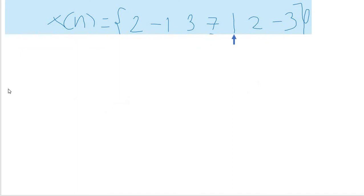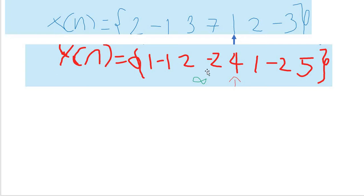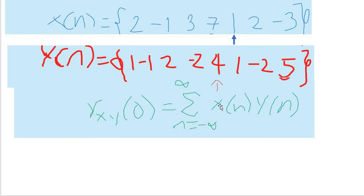So our example would be this. x(n) equals 2, -1, 3, 7, 1, 2, and -3. As you can see, the origin would be here at the first element. And here is y(n). The origin would be this. Now we're going to use the formula that we've seen earlier. At L equals 0, so y(n-L) or minus 0, so I omit it. That's why we're going to use this. How do we do that? The first thing is we're going to multiply.